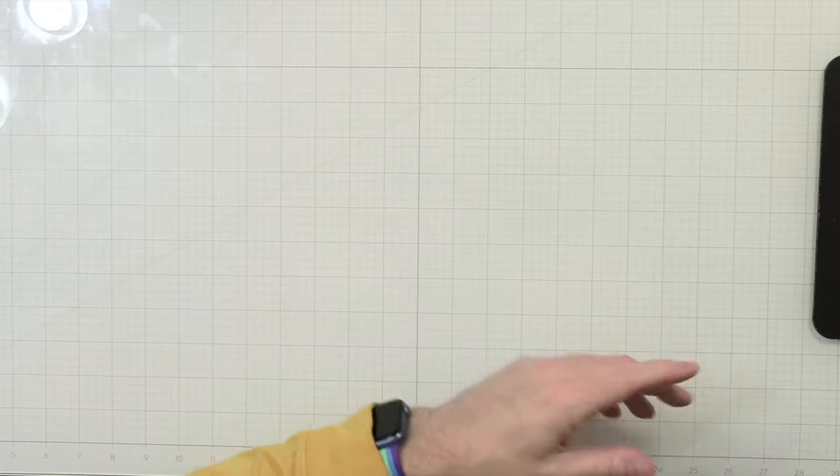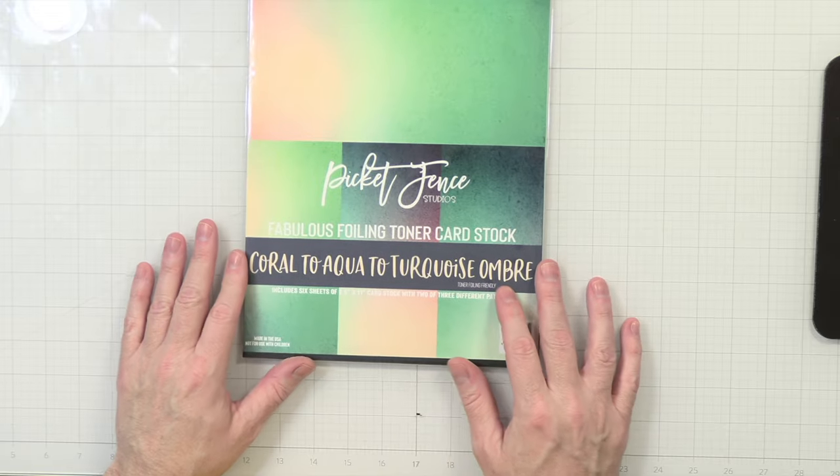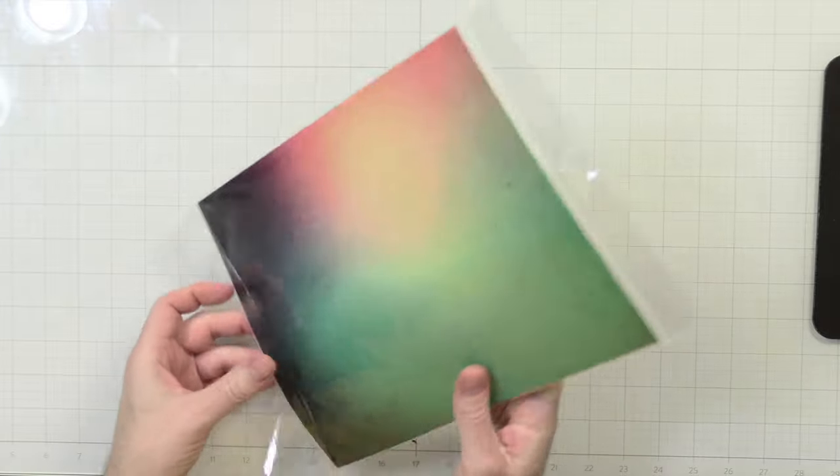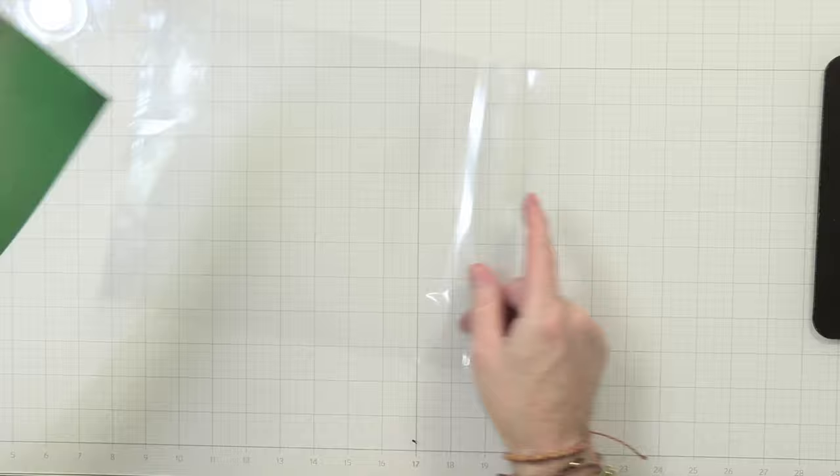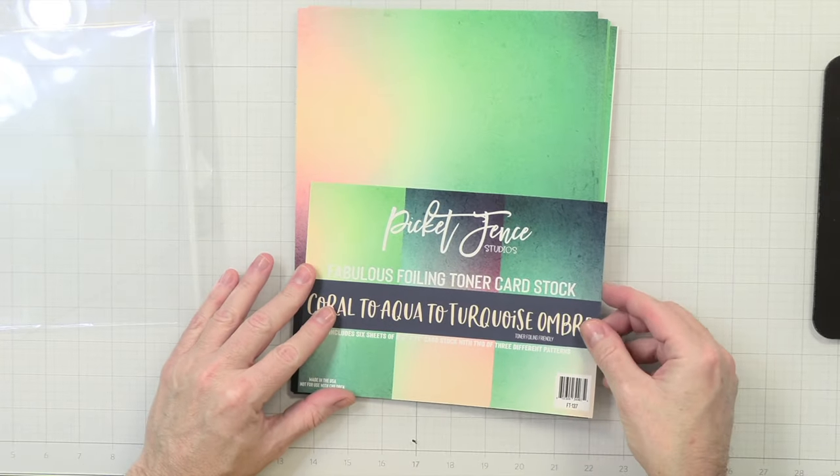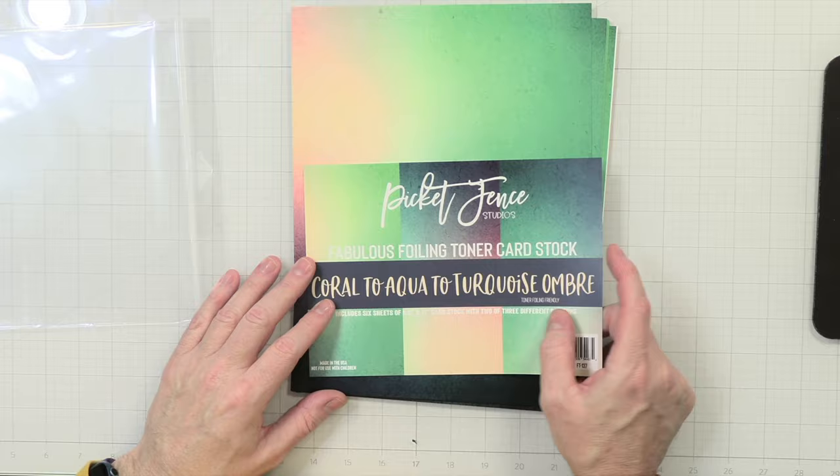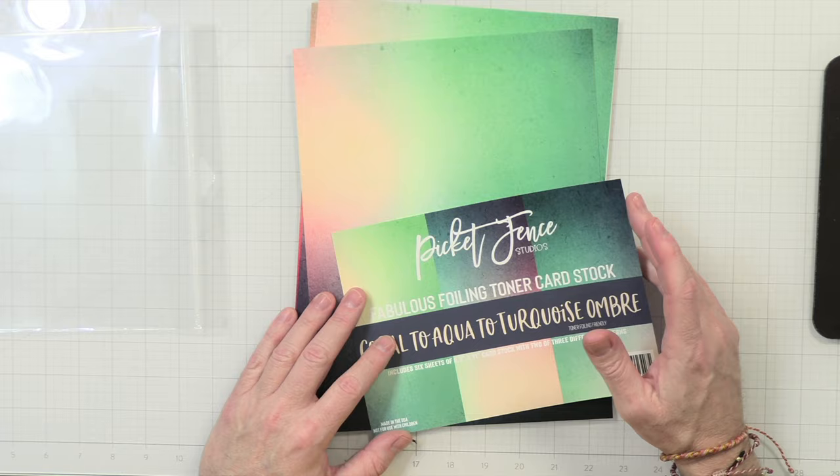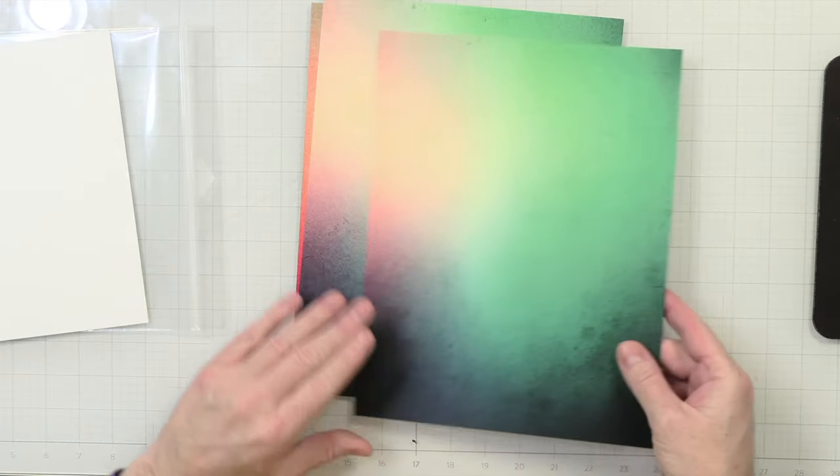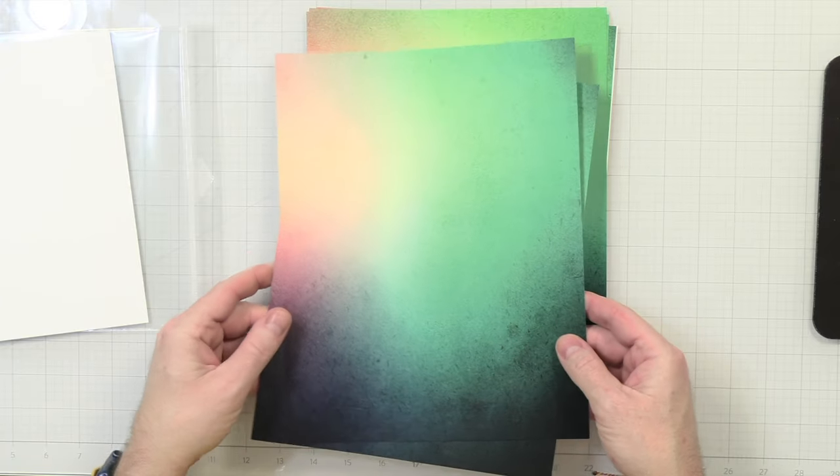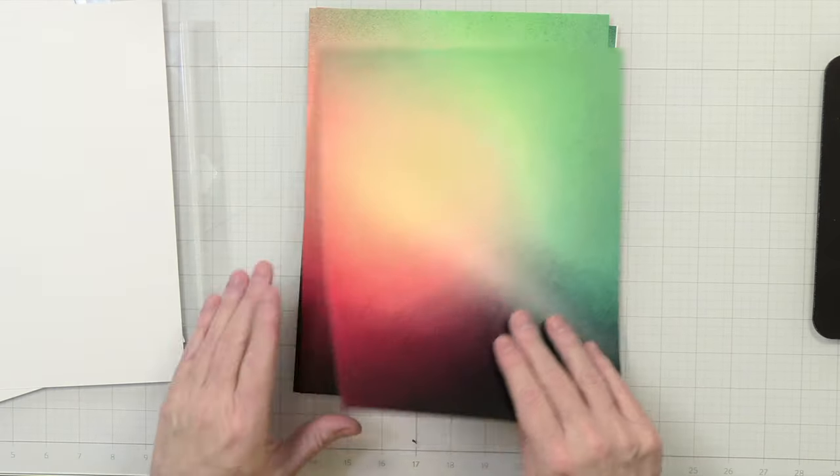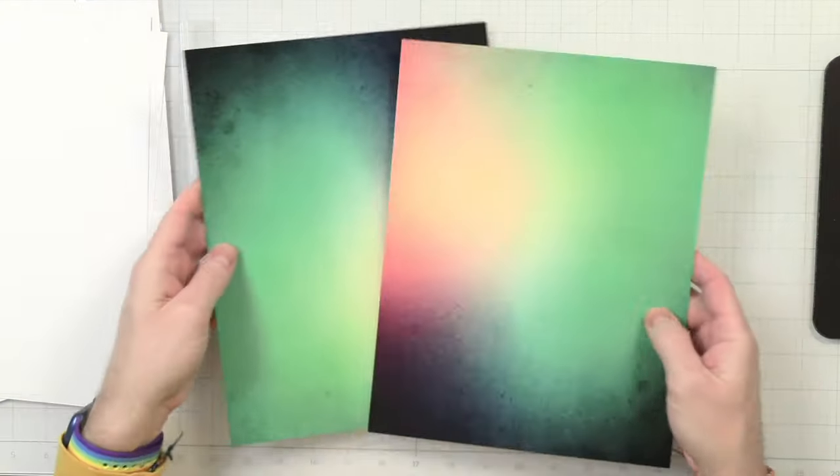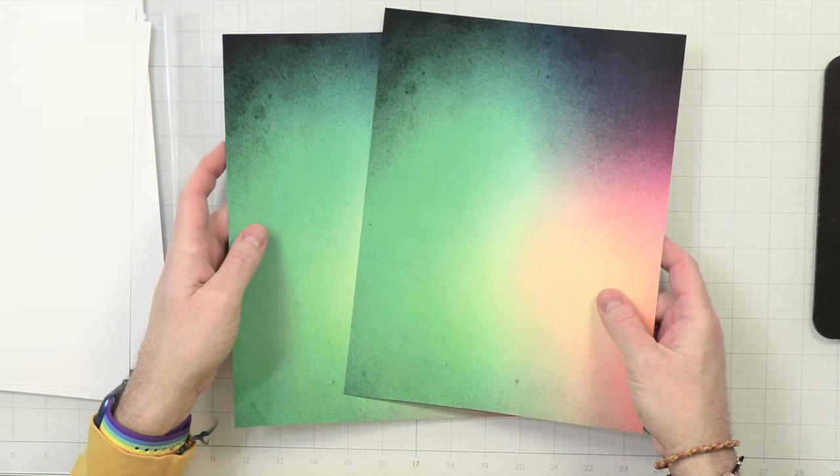Up next we have Coral to Aqua to Turquoise Ombre. Oh, I can tell that's pretty already. Oh, look at that right there y'all. That is nice. Okay, and these are toner friendly, so you can use this on foil. Really pretty colors you guys, look at that. Wow. Those are really really nice.